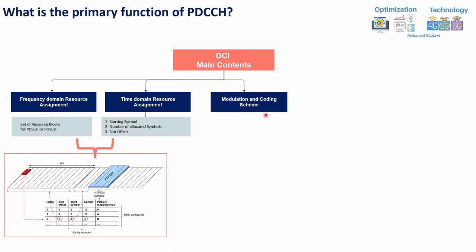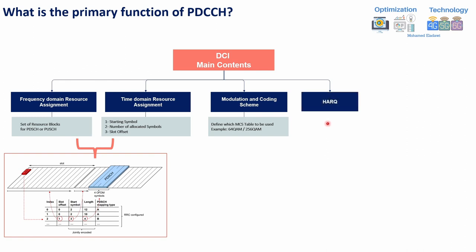Secondly, DCI carries the modulation and coding scheme — it informs the UE about which MCS table to use, whether 64QAM, 256QAM, and so on. Another important piece of information carried by DCI is HARQ feedback timing. If the user is receiving downlink data, he needs to send an acknowledgement and needs to know where and when to send it.